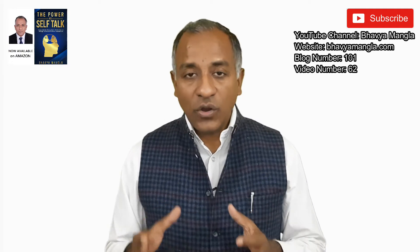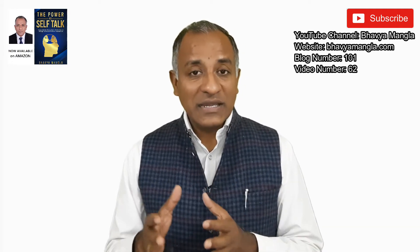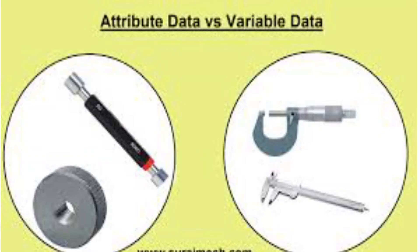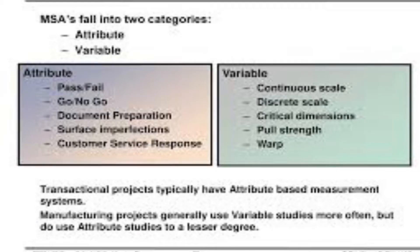When we talk about variable study and attribute study as per MSA, in a variable study we are collecting a lot of data and based on that we plot and see whether it is complying with the requirement or not. In attribute data, it is finite data — there is a limitation of data — and based on that we try to see whether the operator is finding the correct part or not.